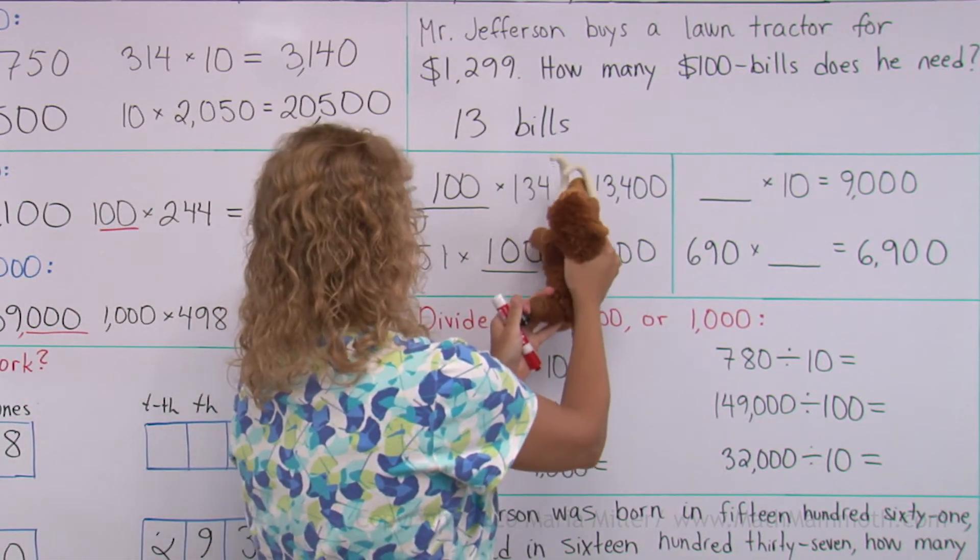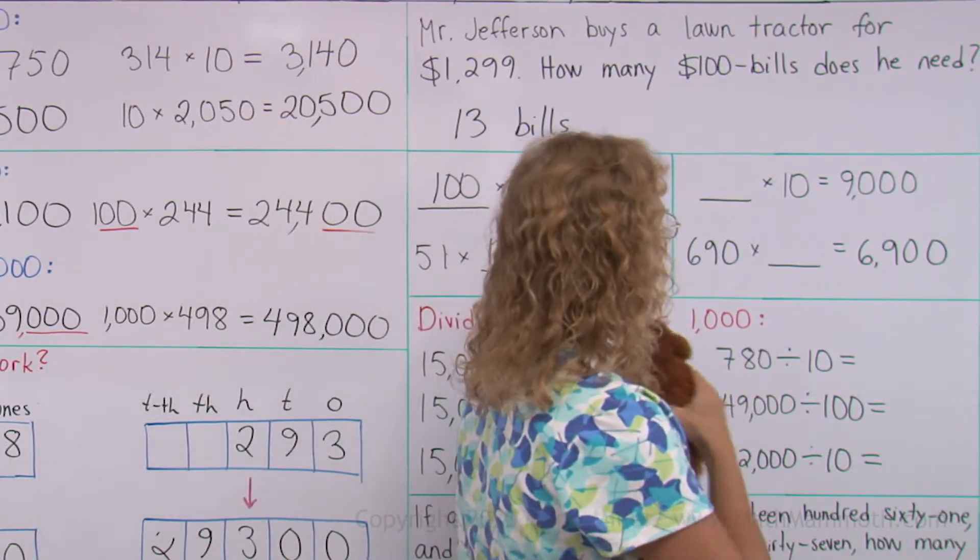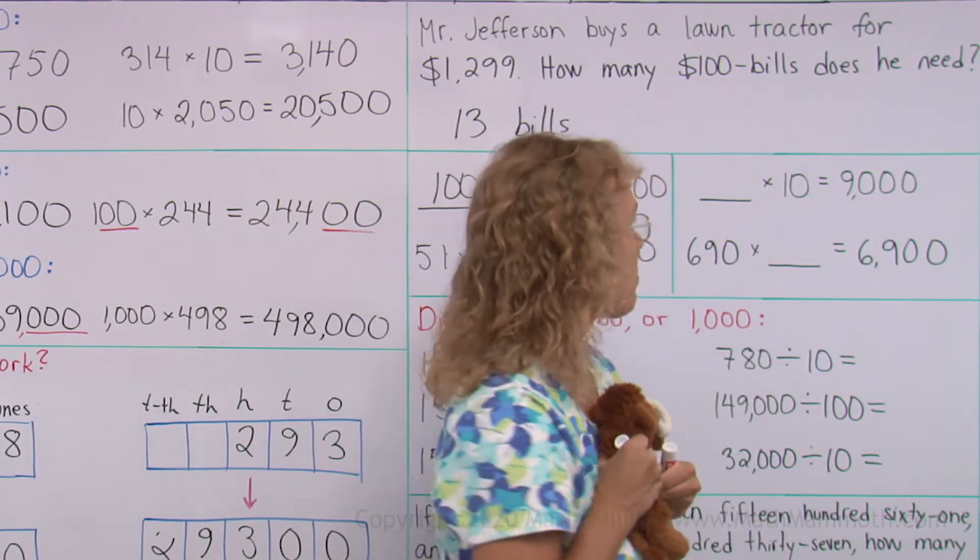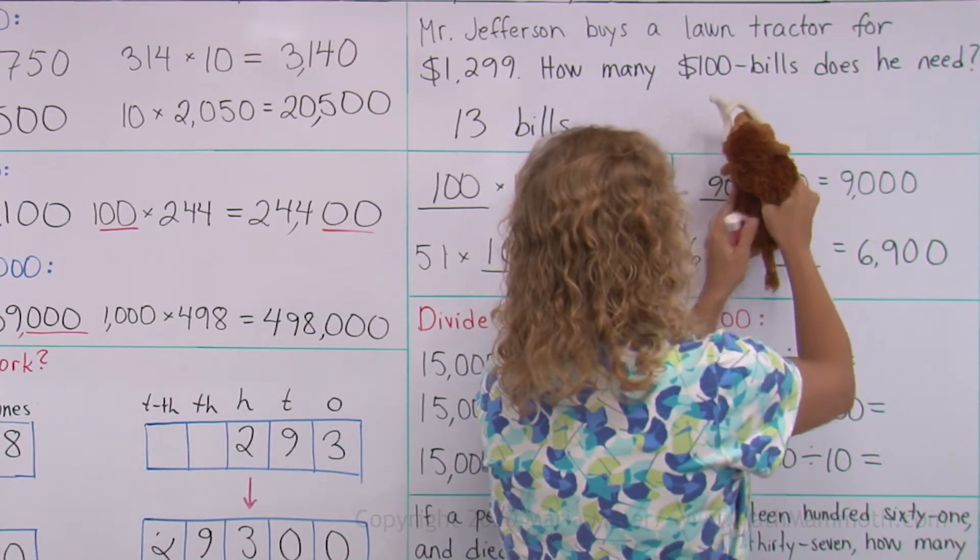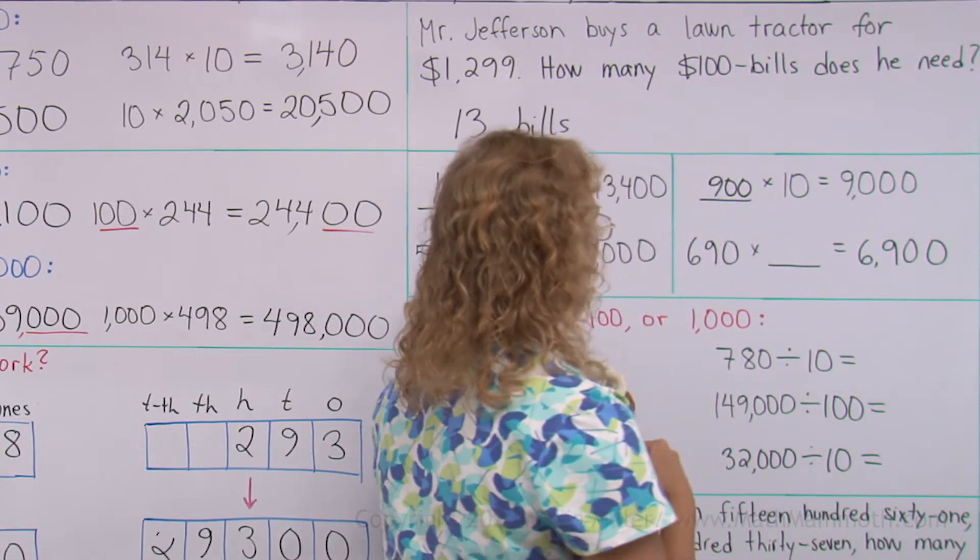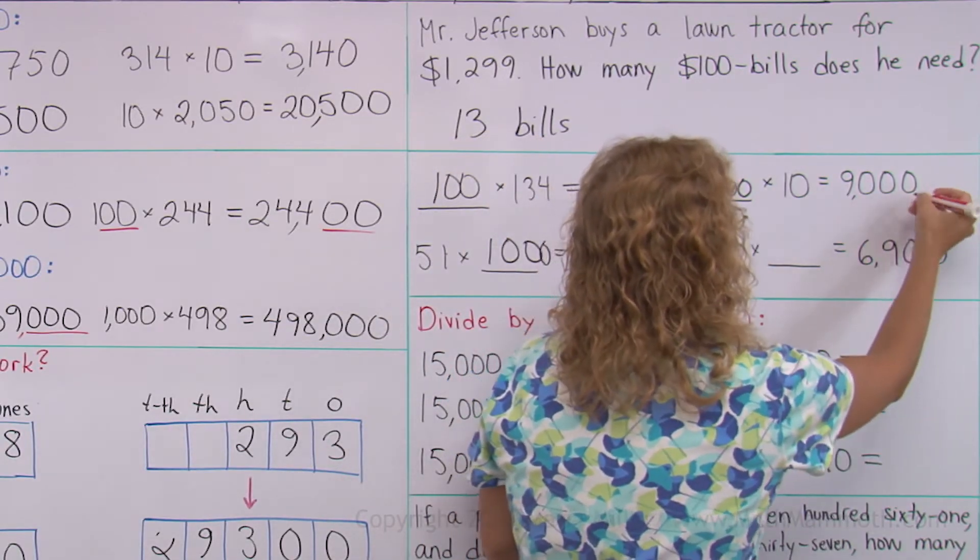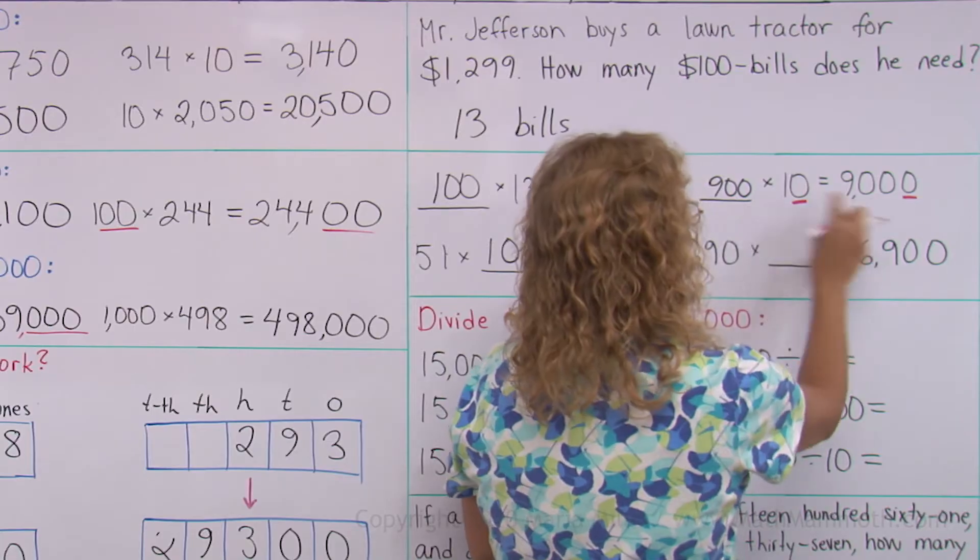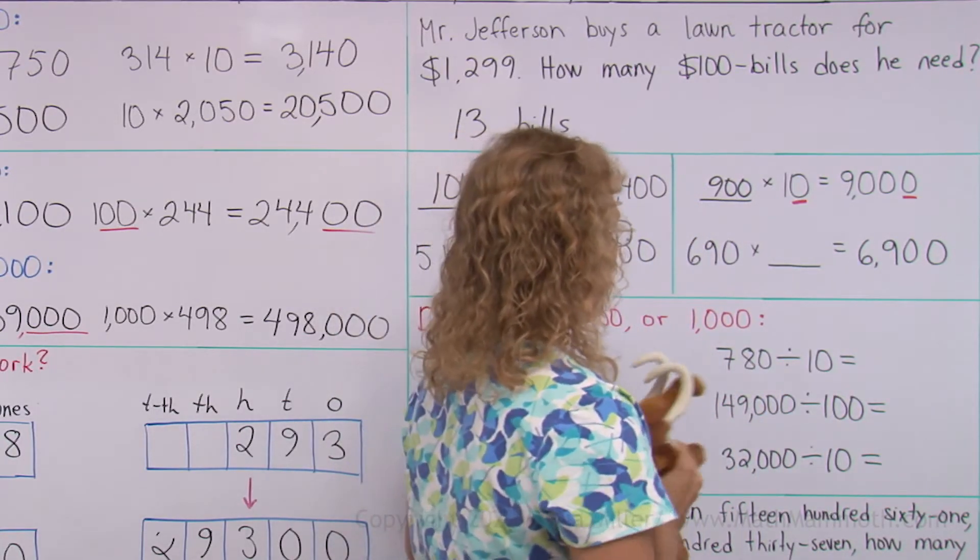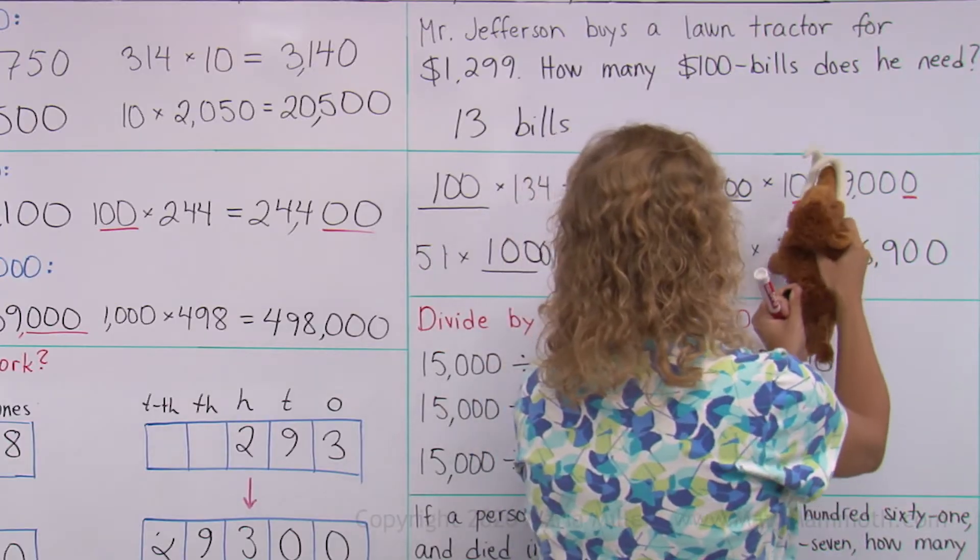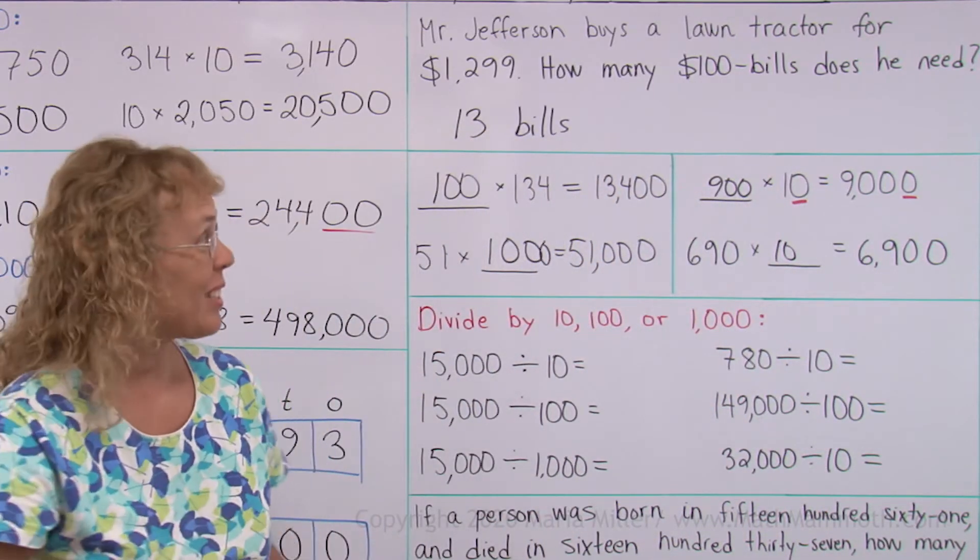You see it? You see it? Yeah. Thousand. Now, but here, something times ten is 9,000. 900? Okay. Let's check. There's 900. And there's the one zero here. 900? Yes. And the last one, Matthew? Okay. Yeah, that's correct, too. Did you get the same ones? Thank you, Matthew.